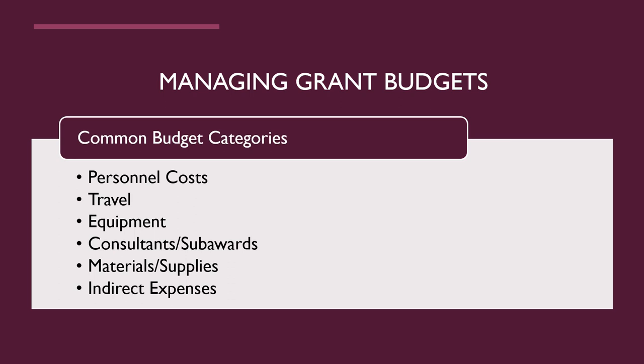What does it mean to manage a grant budget? In a quick summary, it means that you as the grantee will ensure that funds spent on grant project related expenses are appropriate to the project, allowable, and within approved budget line items. A grant funded project will almost always have a project budget that breaks down the budget into categories.